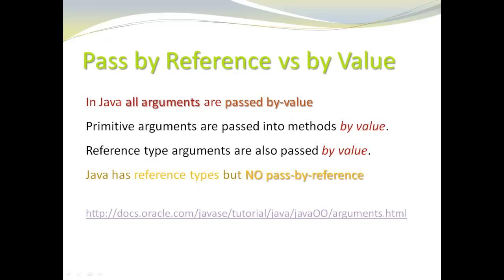Different programming languages have different ways to pass their arguments — could be passed by value, could be passed by reference. However, in Java, all arguments are passed by value. In Java, we have reference types, but we have no pass by reference. Primitive arguments are passed into methods by value, and reference type arguments are also passed into methods by value. This is sometimes a bit counterintuitive, so I've included a link to the Java tutorial where you can read up more about it. For now, I'm just going to show a code example.